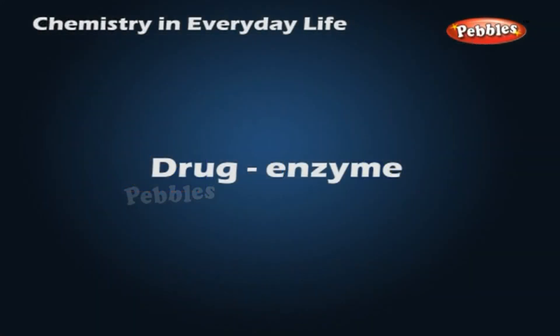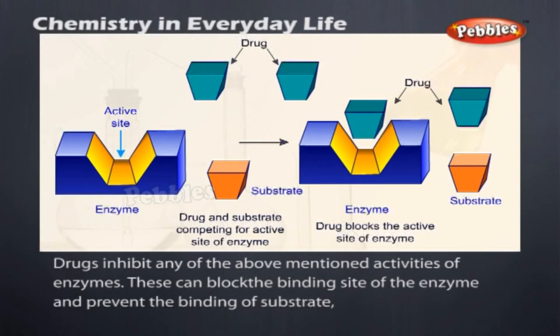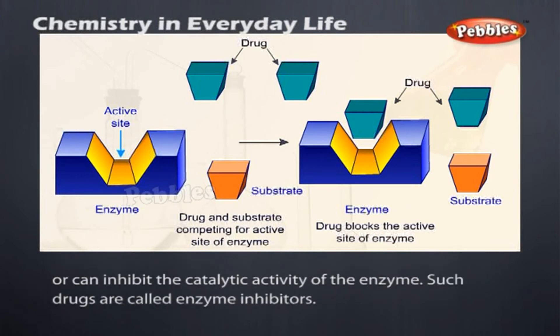Drugs inhibit any of the above mentioned activities of enzymes. These can block the binding site of the enzyme and prevent the binding of substrate, or can inhibit the catalytic activity of the enzyme. Such drugs are called enzyme inhibitors.